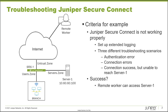Currently Juniper Secure Connect is not working properly, so we'll do a few things to troubleshoot. First, we'll set up extended logging so we can really understand what's going on. Then we'll have three troubleshooting scenarios: an authentication error, some connection errors, and then a connection success but inability to access SRX1. Our definition of success is when the remote worker can access SRX1.